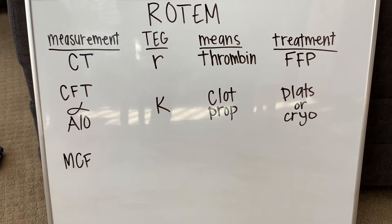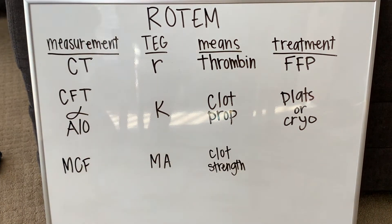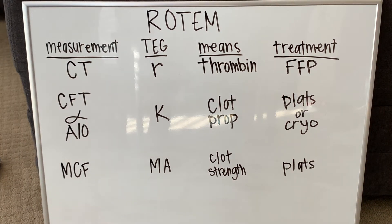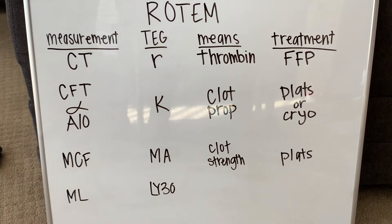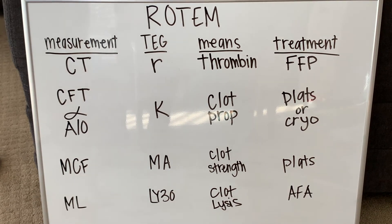The next measurement is MCF, which equals the MA on TEG. That is equal to clot strength, and if that number is low, then you want to give platelets. Then there's the ML, which equals Lysis 30. That tells us if we have too much clot lysis, and the treatment is antifibrinolytics — typically either TXA or aminocaproic acid.